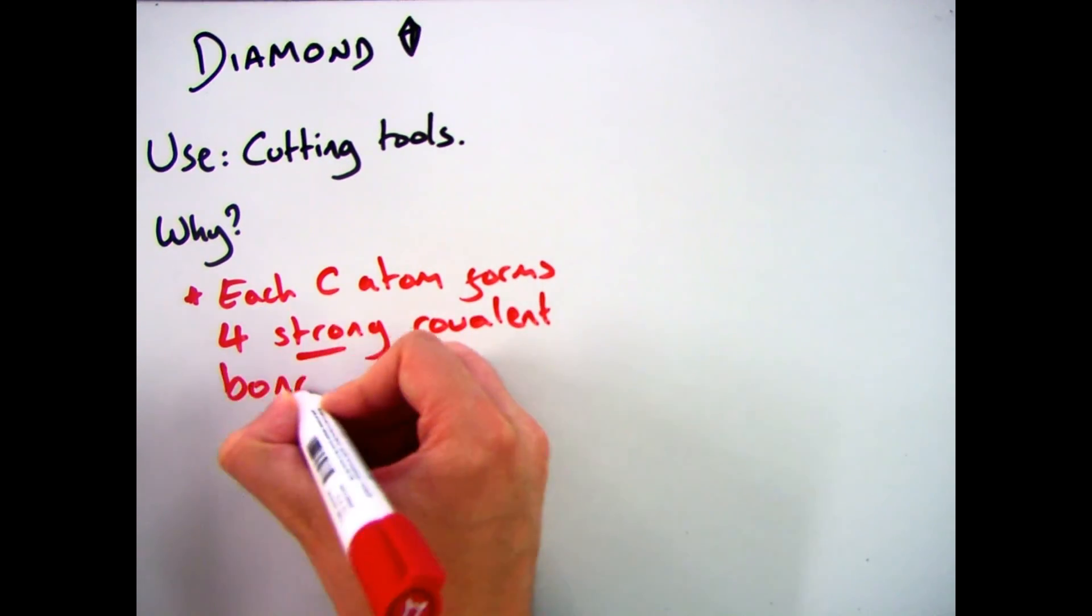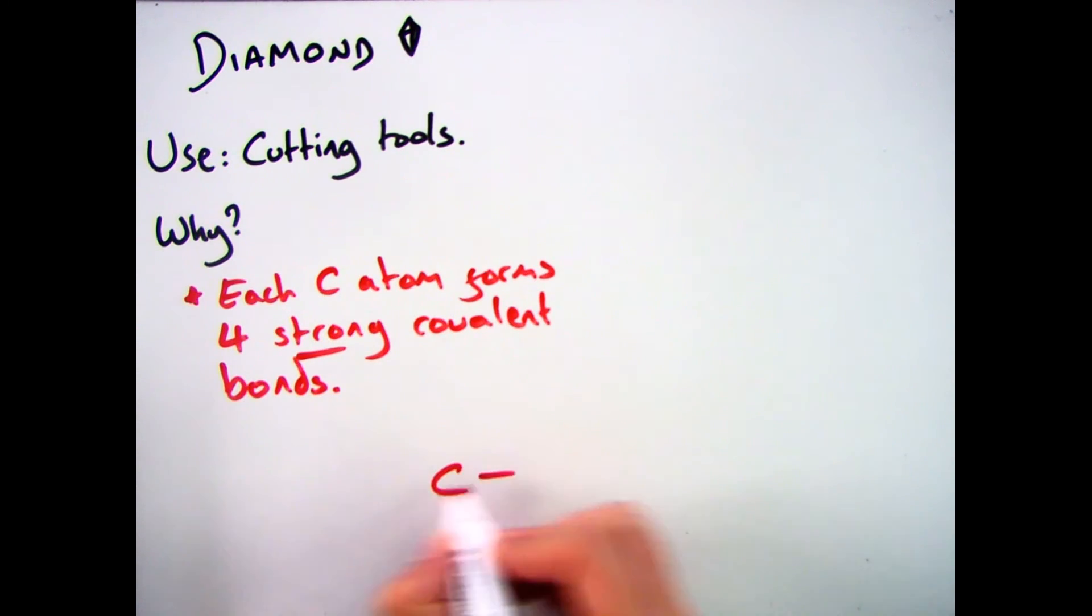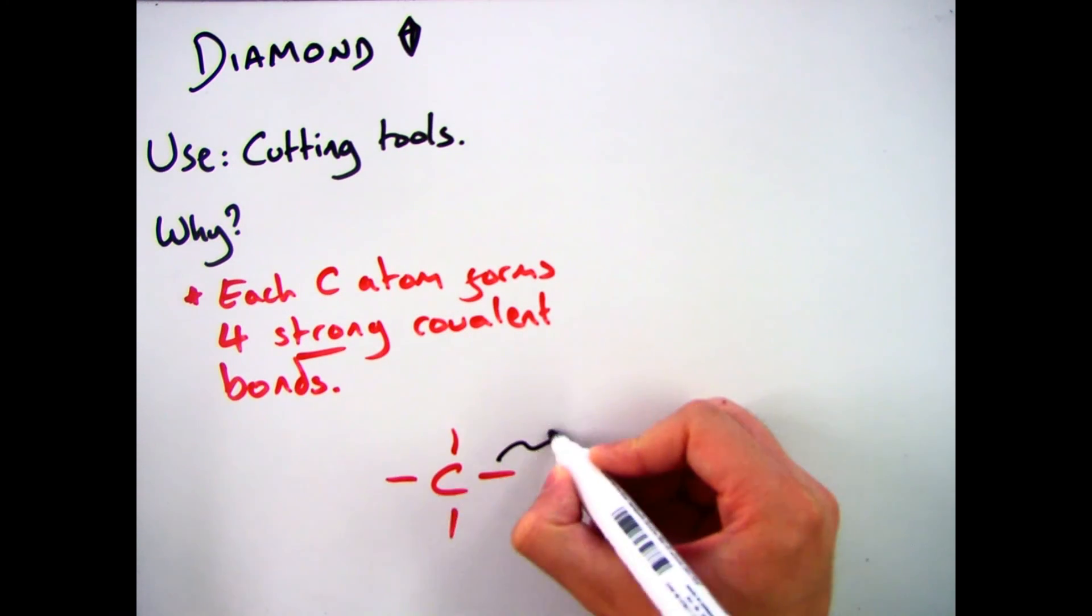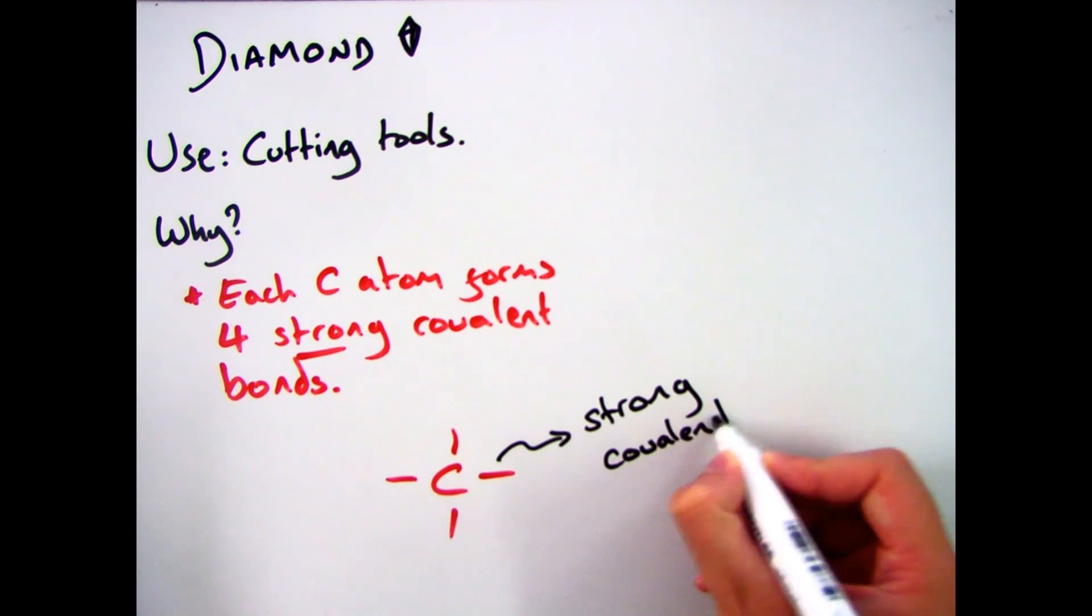Now the reason for that, we have to go back to the actual properties of it. So if you remember back to the previous video where we said that diamond, every carbon atom forms four strong covalent bonds.